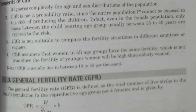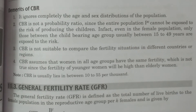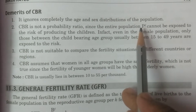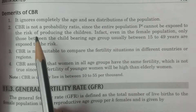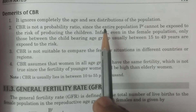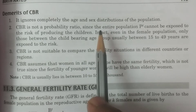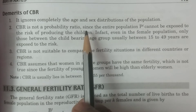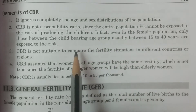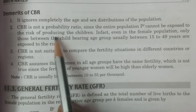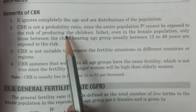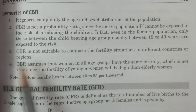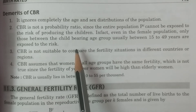Now the demerits of CBR. The first demerit is that it ignores completely the age and sex distributions of the population. This is a very important demerit — we cannot consider different factors like age and sex separately. The birth rate cannot be calculated separately for different age and sex distributions in CBR.